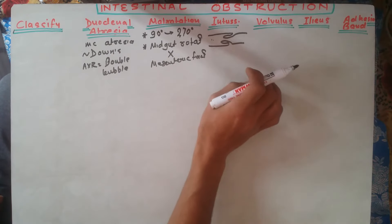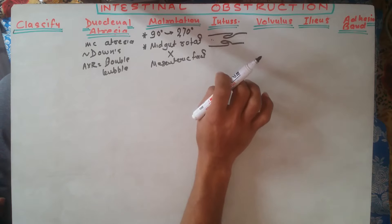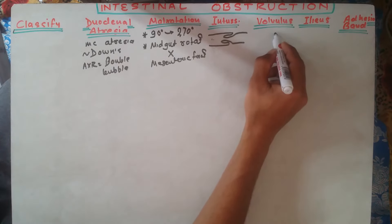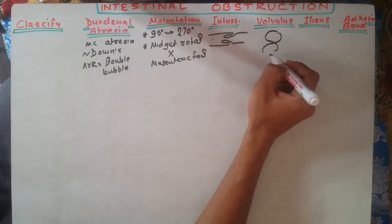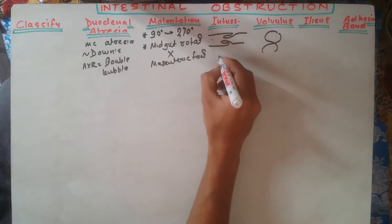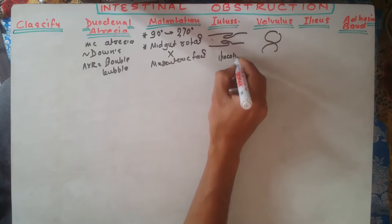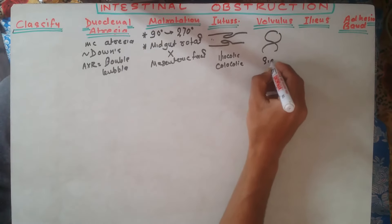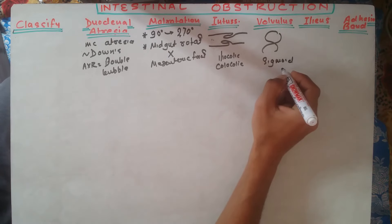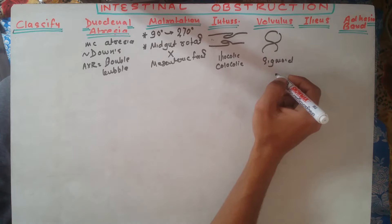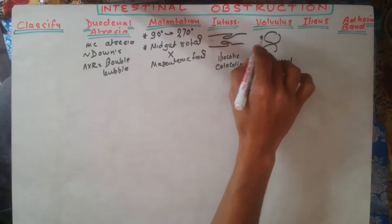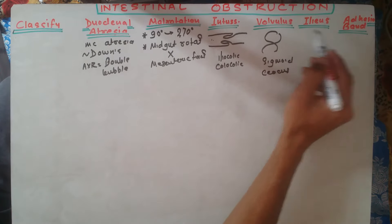Intussusception is the invagination of an intestinal segment into the intussusceptum. Volvulus is simply twisting of the intestinal gut. Intussusception is seen in the ileocolic or colonocolic region, whereas volvulus is present most commonly in the sigmoid colon. The second most common site for volvulus is the cecum.